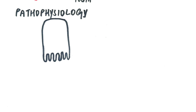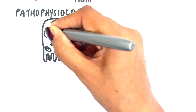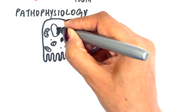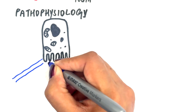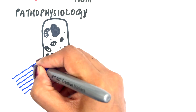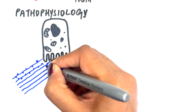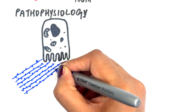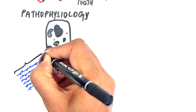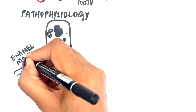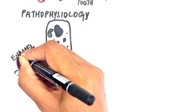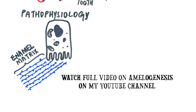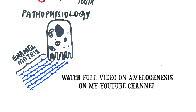Normally, this matrix undergoes controlled breakdown, allowing calcium and phosphate to be incorporated, forming highly mineralized enamel crystals. Excessive fluoride ingestion disrupts this process by interfering with ameloblast function, delaying protein breakdown and mineral deposition.